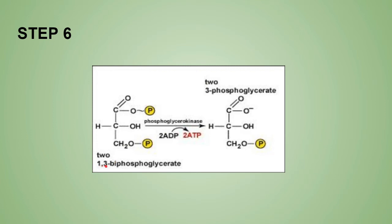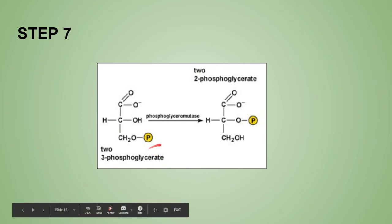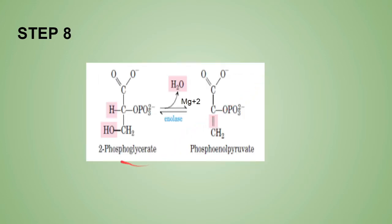Step 7: 3-phosphoglycerate undergoes a mutase reaction. The enzyme phosphoglyceromutase acts and converts it to 2-phosphoglycerate — two molecules of 2-phosphoglycerate are formed.